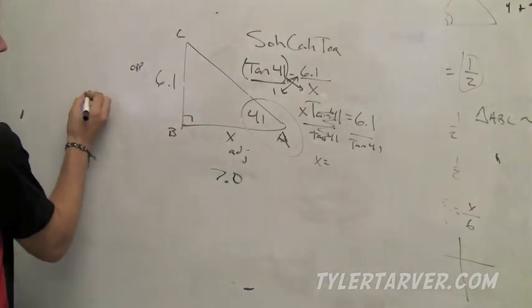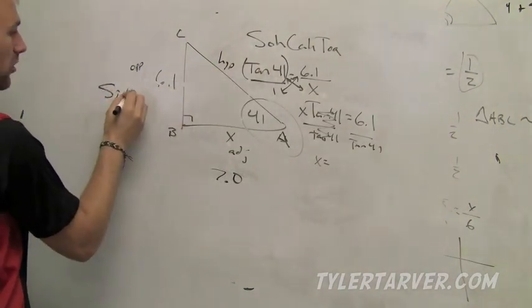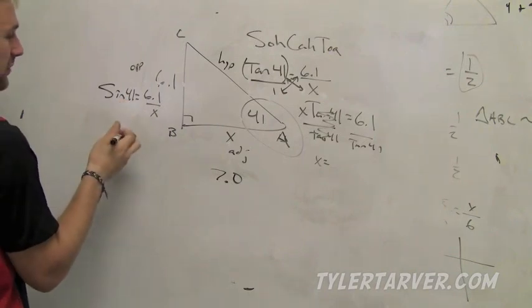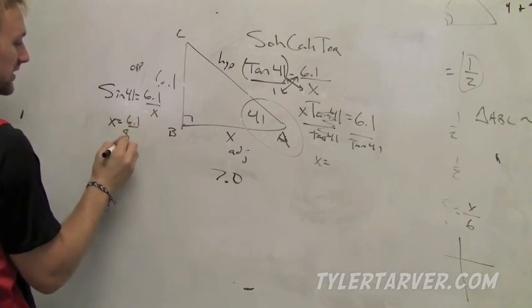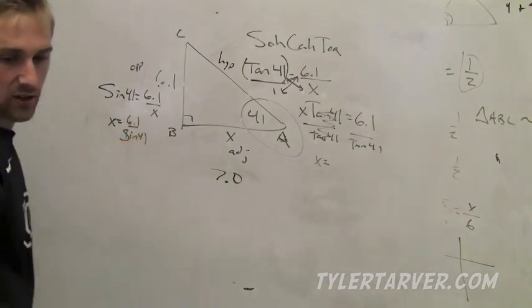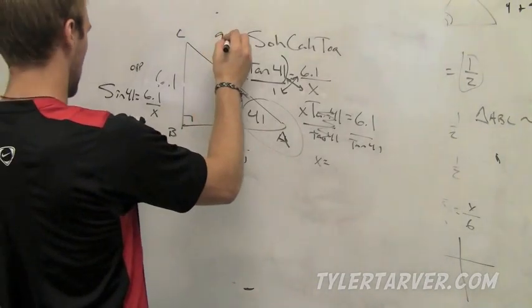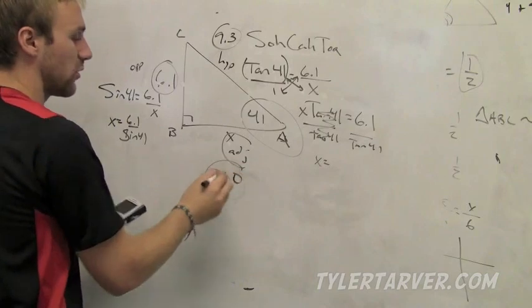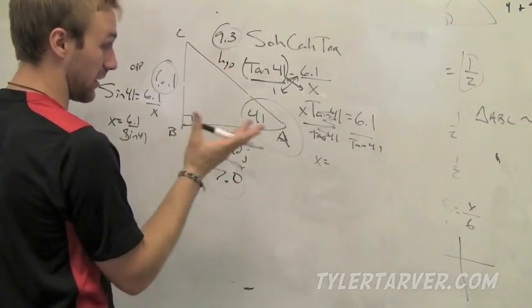Let's say that's 41, so that's opposite, that's hypotenuse. That means we're doing sine. Sine of 41 equals 6.1 over X. I think the easiest thing is to switch them when the variable's on the bottom, and then that'll be X equals 6.1 divided by sine of 41. Type that in our calculator, we get 9.3. Now do these look like they make sense? According to the way we do angle stuff, hypotenuse should always be the biggest because it's the biggest angle, 9.3, that works.